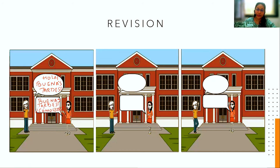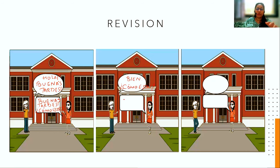The girl says 'buenas tardes, cómo estás' (good afternoon, how are you). The boy replies 'bien' (I'm good/fine) and, being courteous, also asks 'cómo estás' (how are you). She says 'regular' (I'm okay, the usual) and adds 'gracias' (thank you) because he asked.